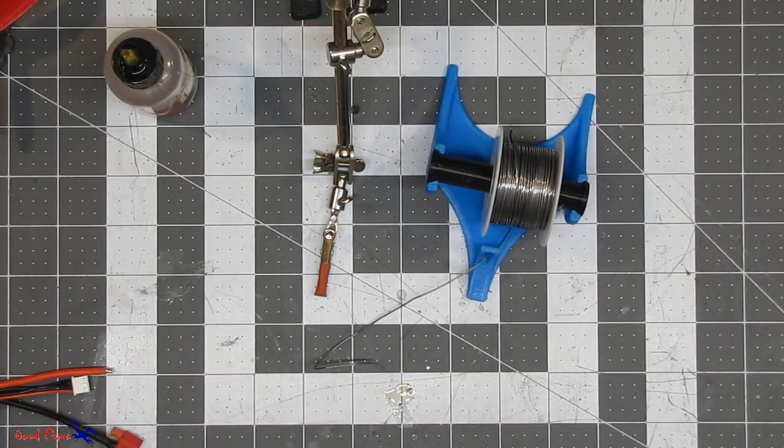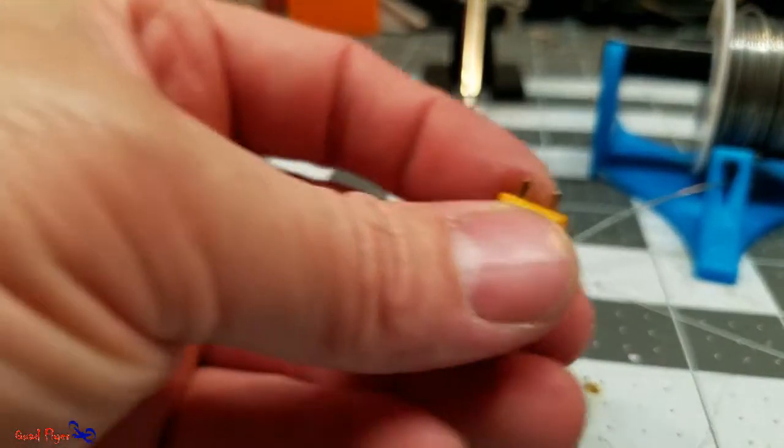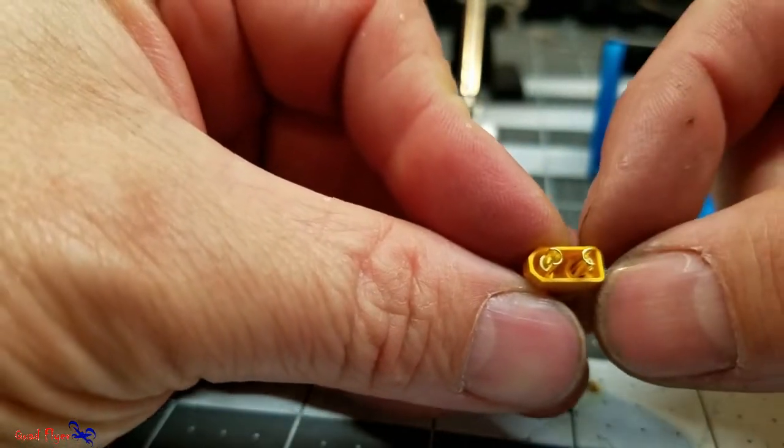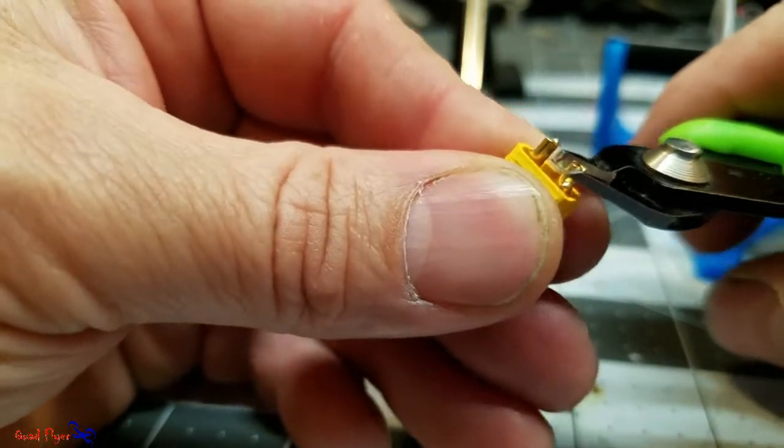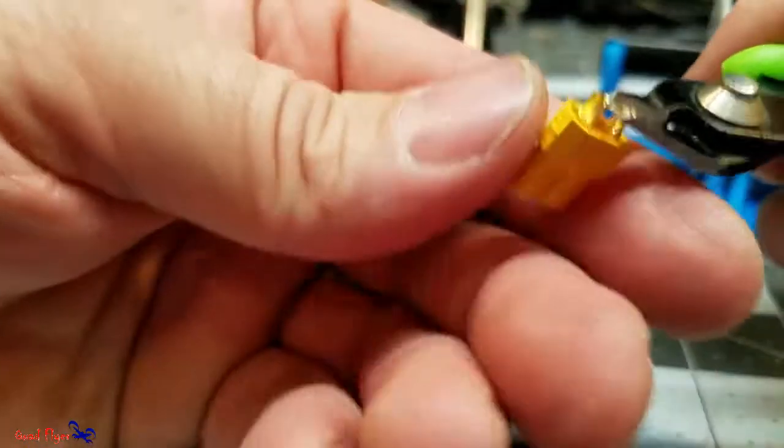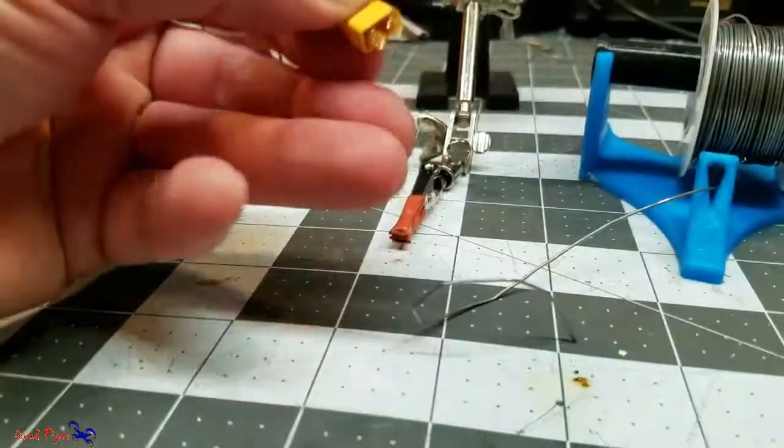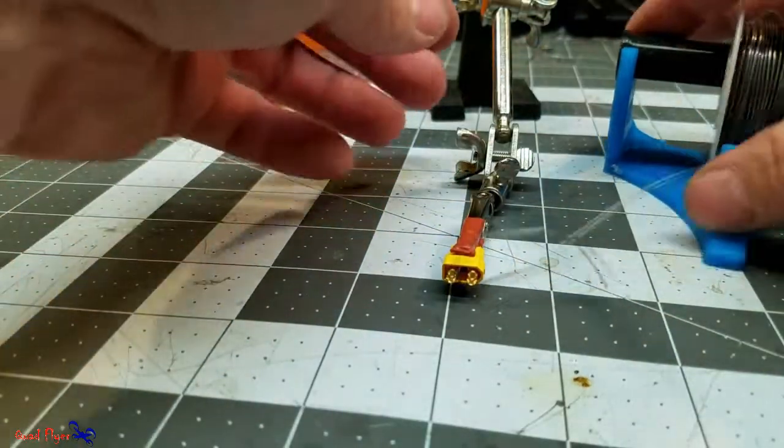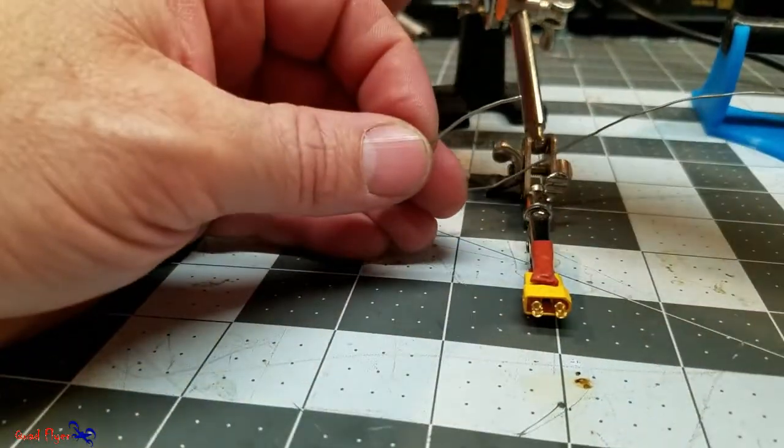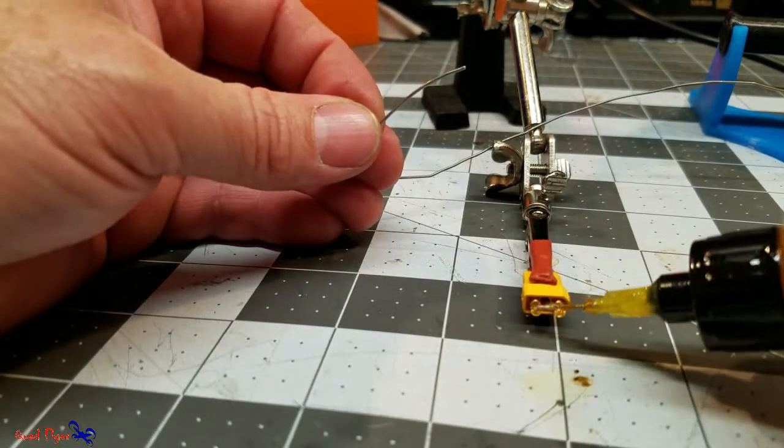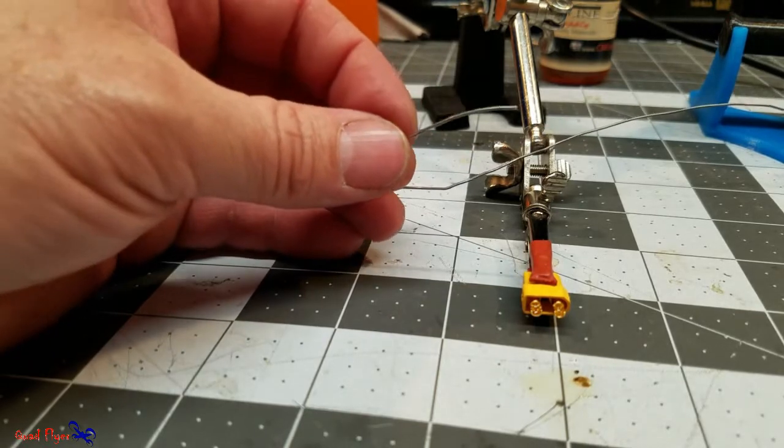So now that we have that, we are going to grab the XT30 connector. And on this particular connector, the tabs are turned. The one's facing this way, the other one's facing that way. What I like to do is I like to take a pair of pliers or these cutters and just reach in here and spin this around to where both of these are up here on top, just like that. And then I'm going to use my helping hands here to hold the connector like that.